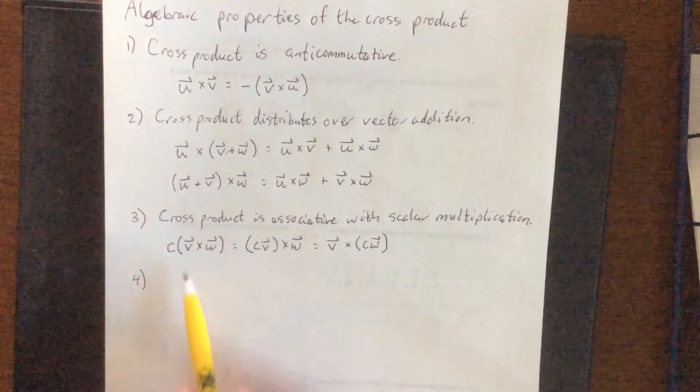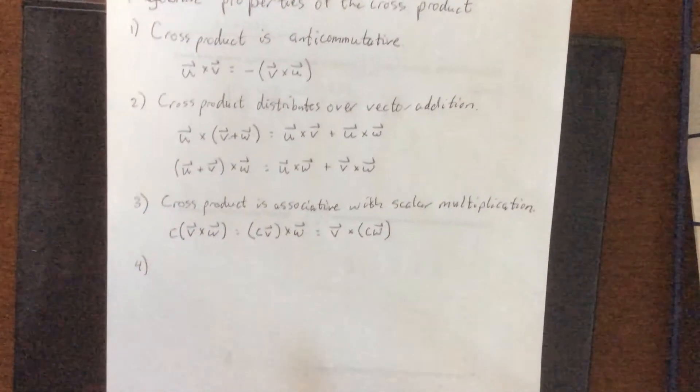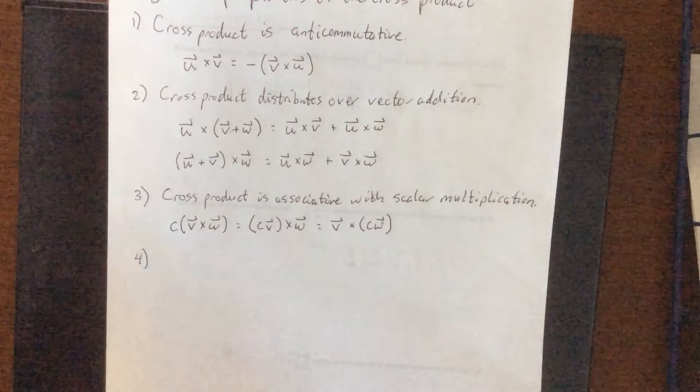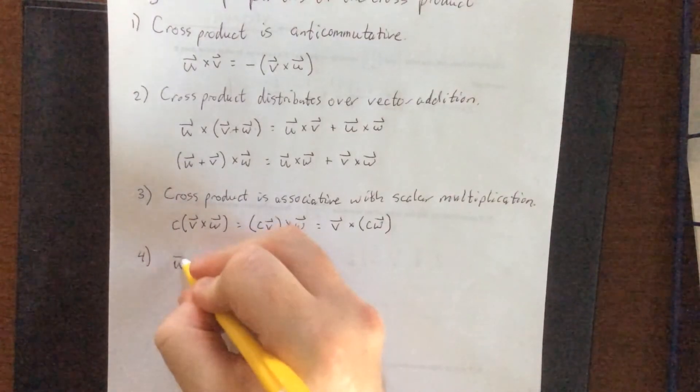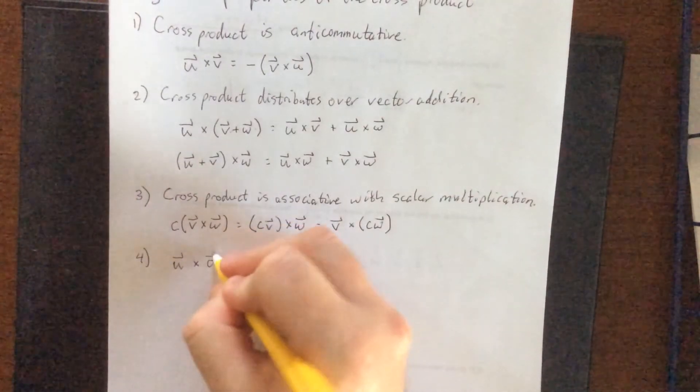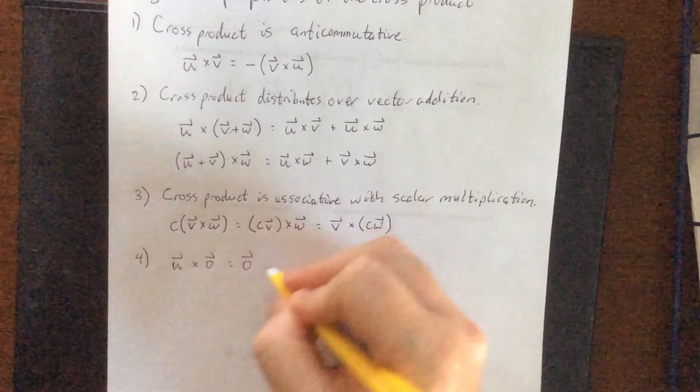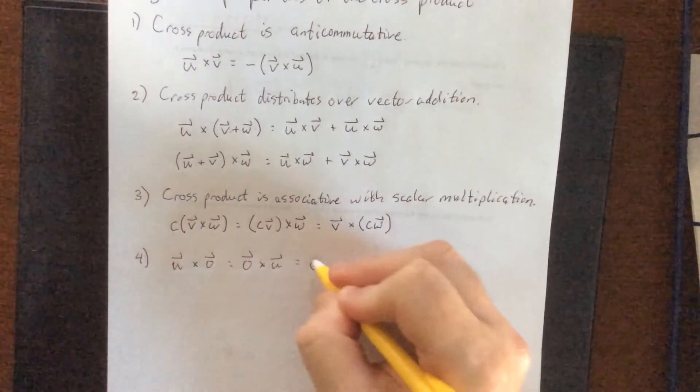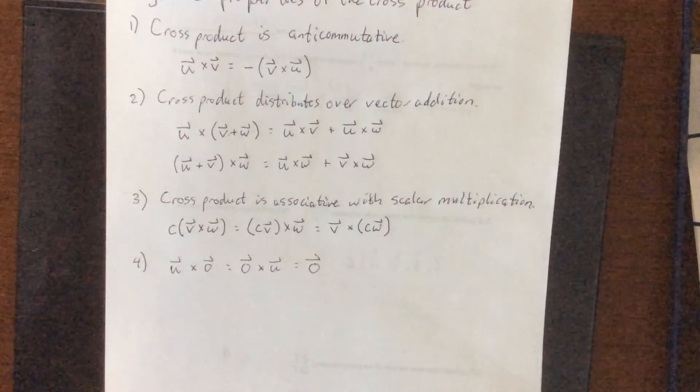So that is our associative property when it comes to scalar multiplication. Now the result is going to be a vector in all three cases, so no worries there. Next up, if I take the cross product of any vector with the zero vector, and it does not matter the order in which you do it, you are going to get the zero vector.